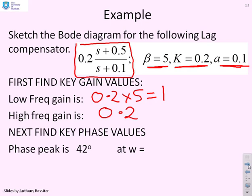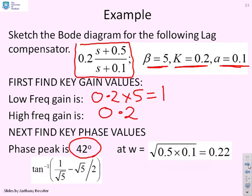What about the key phase characteristics? Now given this beta equals 5, I can use the phase formula to show us that the phase peak is at 42 degrees, and I think the values are here. You'll see the geometric mean of the corner frequencies is the square root of 0.5 times 0.1, which is 0.22, and there's the formula we said that gives us the phase peak. So these are the key values I need to do a sketch.